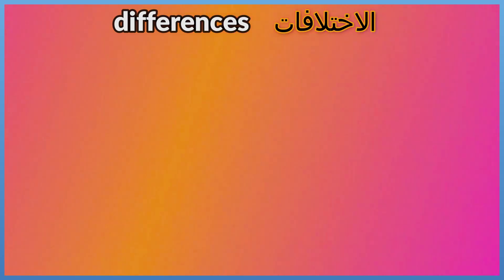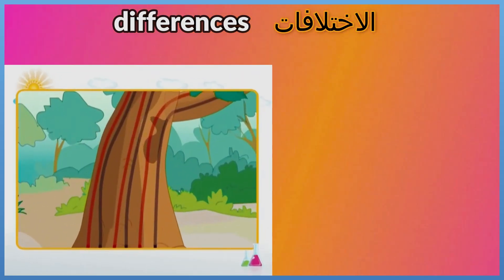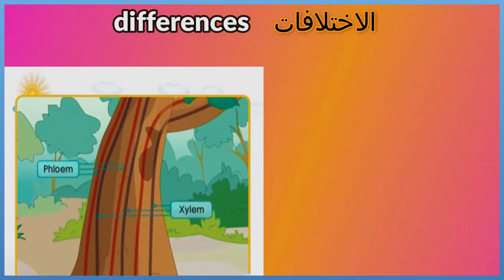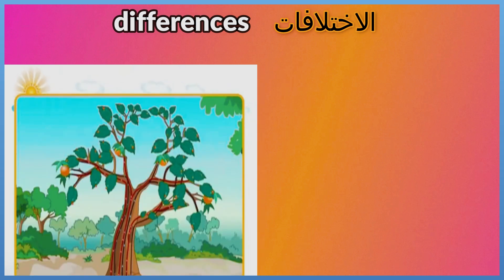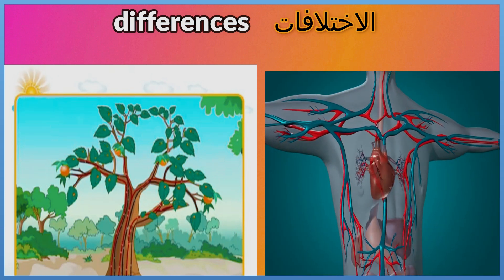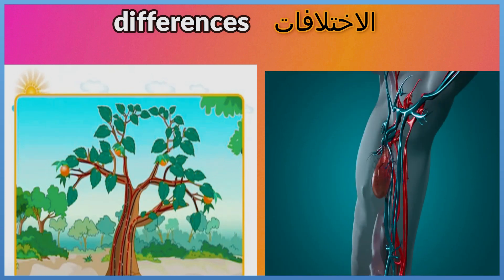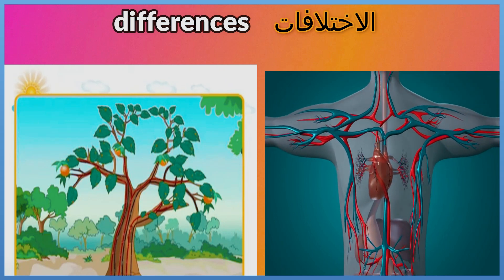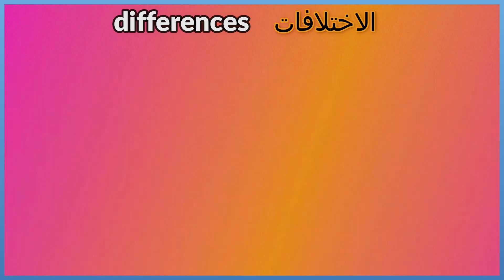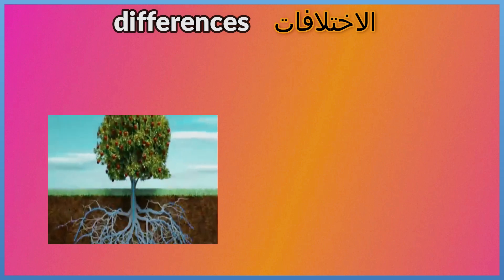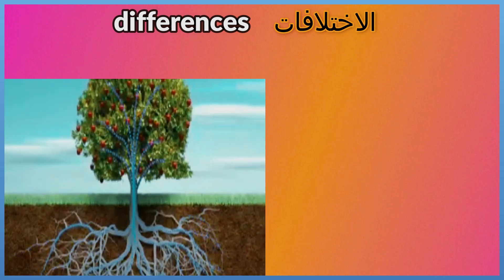Differences: The transport system in plants is a system of tubes called xylem and phloem that transport different materials around the plant parts. The transport system in humans is the circulatory system that moves blood around the human body. Xylem tubes carry water and nutrients from the roots to the leaves.